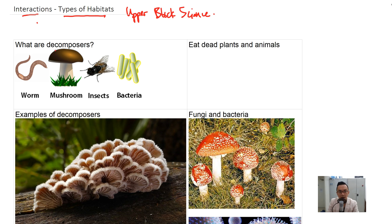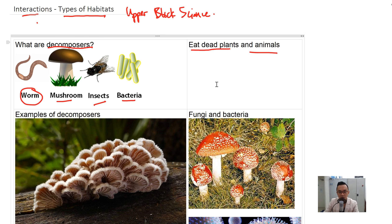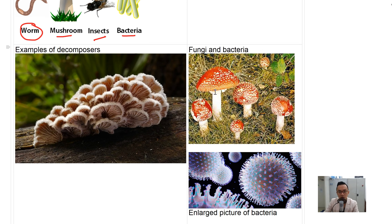So what are decomposers? Basically, decomposers are worms, mushrooms or fungi, insects, and bacteria. So what do they do? They eat dead plants and animals. I'll give you some examples of what decomposers look like.